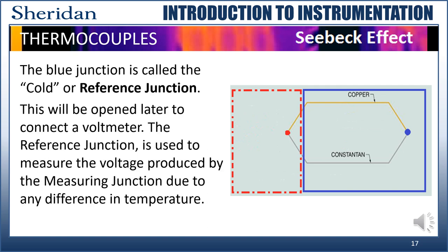The blue junction is called the cold or reference junction. This will be opened later to connect a voltmeter. The reference junction is used to measure the voltage produced by the measuring junction due to any difference in temperature. Again, don't focus on the word cold strictly in terms of temperature.